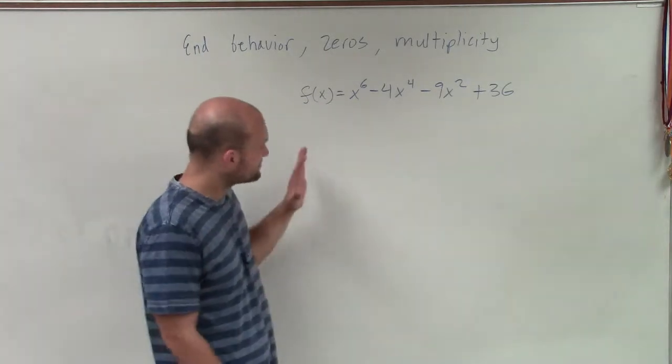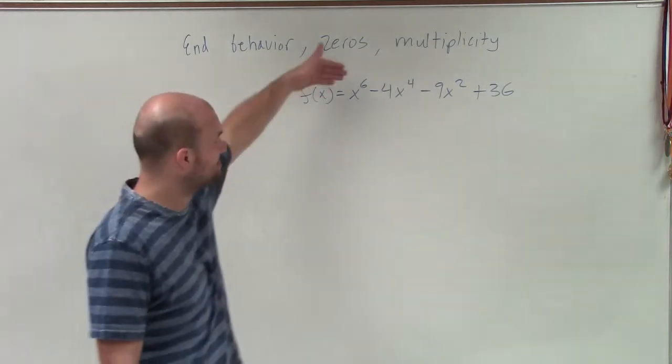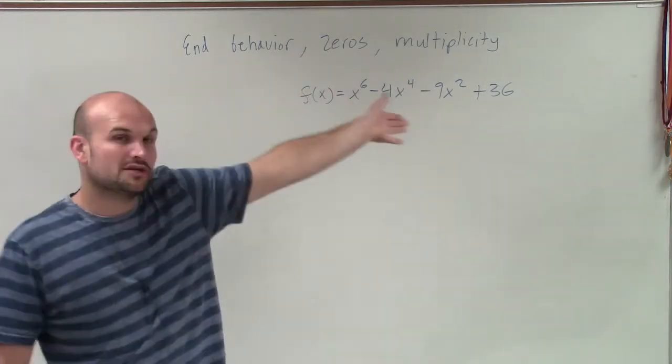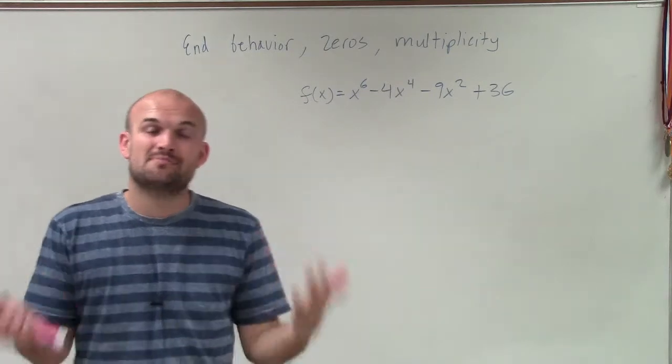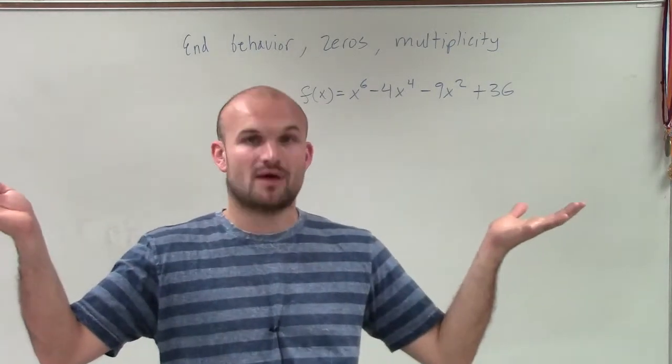When looking at a problem like this to determine the end behavior, we need to look at the degree, which we determine is 6. Then we look at the leading coefficient, which is a positive 1. Since we have an even degree and a positive leading coefficient, we know that the end behavior is going to rise left and rise right.